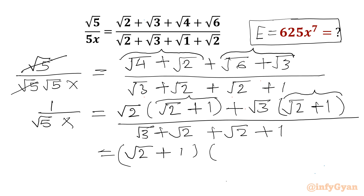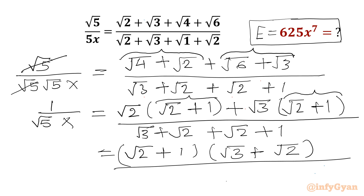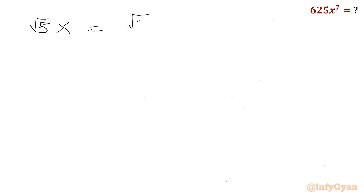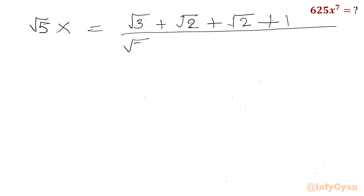In the second bracket it would be root 2 plus root 3. The LHS is 1 over root 5 times x. Now I will flip the numerator and denominator to collect the value of root 5 times x. So I will write root 5 times x equal to the denominator over the numerator, writing root 3 plus root 2 plus root 2 plus 1.